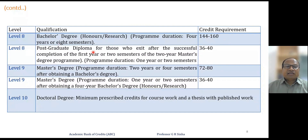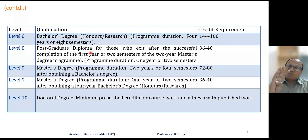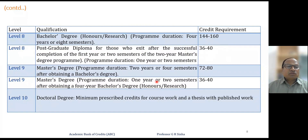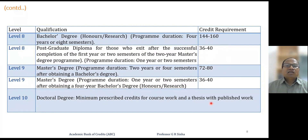At level eight, a postgraduate diploma is awarded after completing the first year or two semesters of a master degree program, earning 36–40 credits. A student admitted to a two-year master program who wants to exit after one year is awarded a PG diploma certificate. At level nine, a master degree is granted after completing two years or four semesters; alternatively, a one-year master degree is offered after obtaining a four-year bachelor degree with honors or a research program. At level ten, a doctoral degree requires the minimum prescribed credits for coursework, submission of thesis and research work.